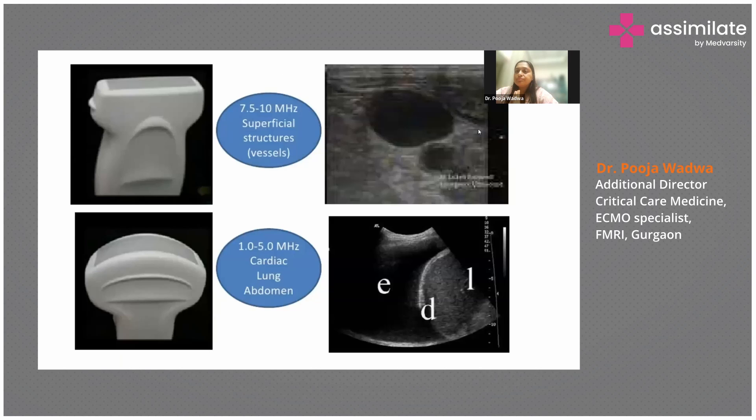The linear probe will be suitable mostly for superficial structures, for example vessels. The curved probe is used for everything — even cardiac, lung, and abdomen. You can see everything through this curved one.